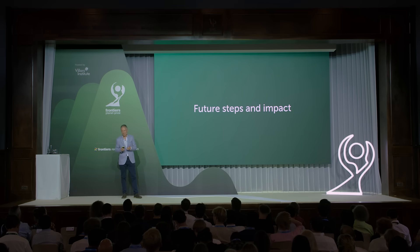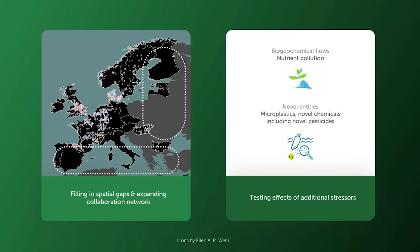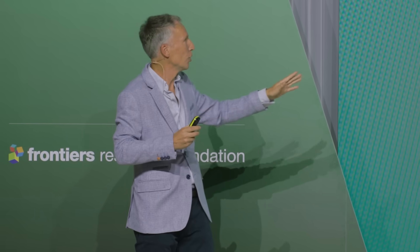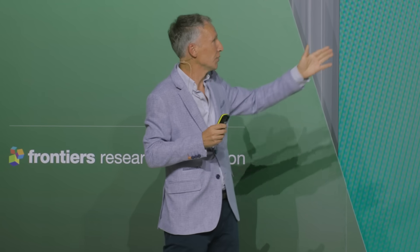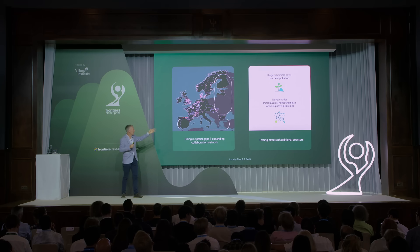What are our future steps and impact? First, we would like to expand our collaboration network and by this fill in some spatial gaps that we still have in parts of southern Europe and eastern Europe. We also try to address further potential stresses by bringing in two more elements of the planetary boundary concept, specifically biogeochemical flows including nutrient pollution, novel entities such as microplastics, novel chemicals, and novel pesticides.